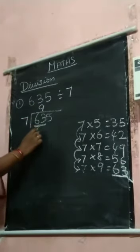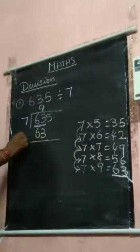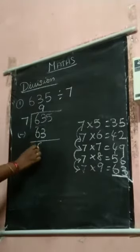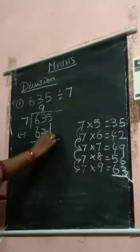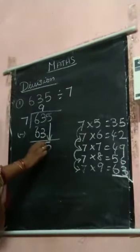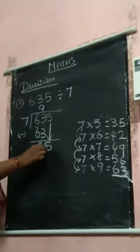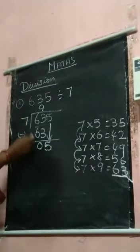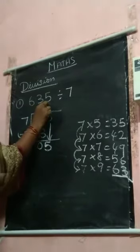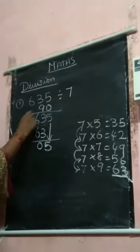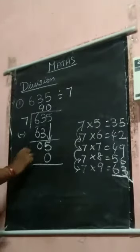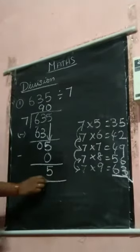7 9's are 63. Now you are going to do the subtraction: 63 minus 63 is 0. So you bring down this 5. But 5 is smaller than 7, so you put 0 up. 7 0's are 0. 5 minus 0 is 5.